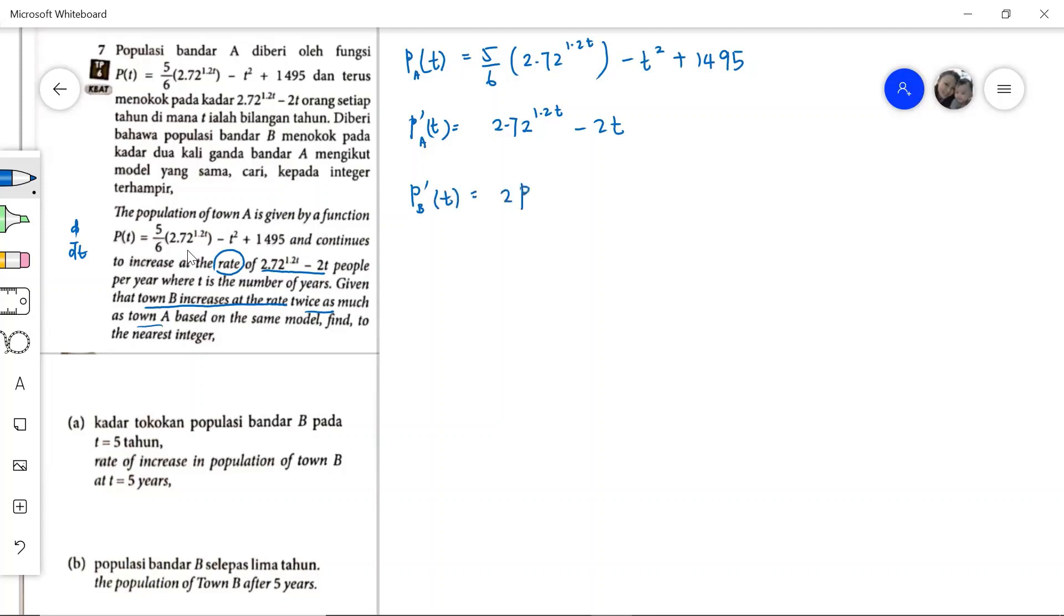So twice of P' of town A. Based on the same model, the population of town B will be quite similar to town A, but the rate of increase is twice the rate of town A.